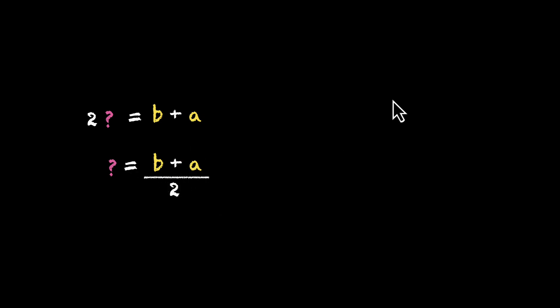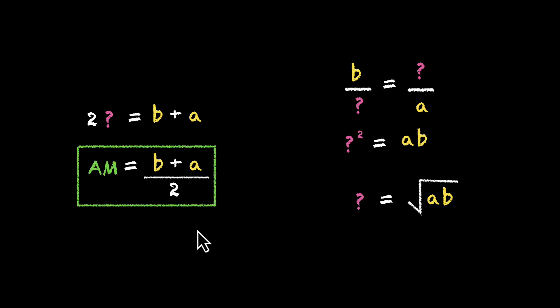And we can do the same thing for the GM. There is nothing special about 2 and 8. So B upon GM is equal to GM upon A. Cross multiplying, we get GM squared equals AB. And because we're going to take the positive value, we can say that the GM is equal to the square root of AB, the positive square root of AB. So we can replace that. AM is this and GM is this. These formulas definitely come handy. But now we also know where they're coming from.